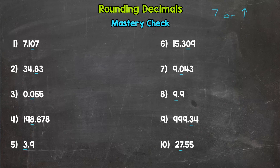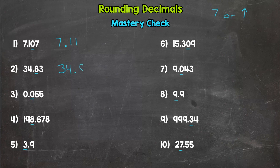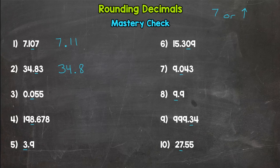So number one, we're rounding to the hundredths place. You should have 7.11. Number two, we are rounding to the tenths place. You should have 34.8. Number three, tenths place, you should have 0.1.